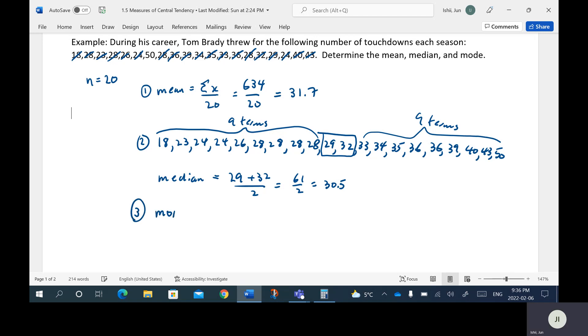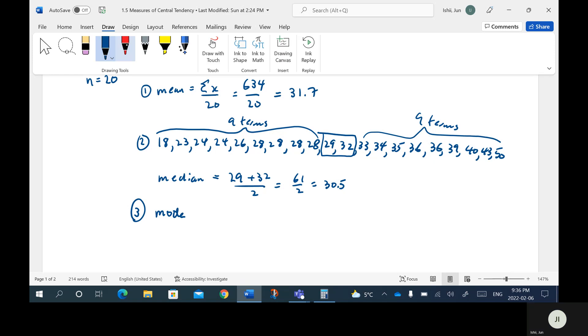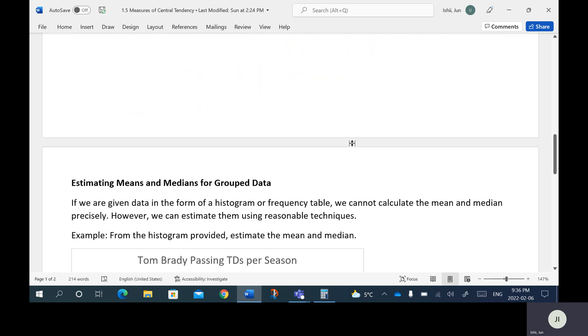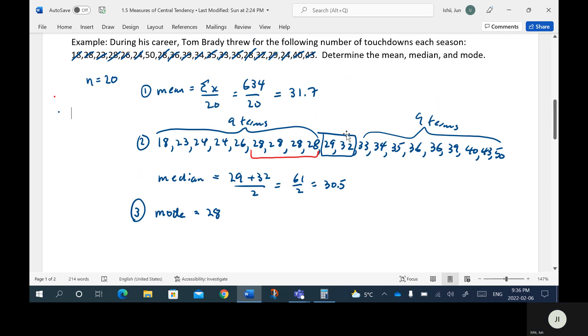Third one here is the mode. That's the one that occurs most often. Now, when you put them in order, it's easy to see which one shows up most often. So in this case, you can see that 28 here shows up four times. There's no other value, you got 36 twice, 24 twice, but there's no other value that shows up most often. So in this case, the mode here would equal 28. So that is, determine the mean median mode of this example.